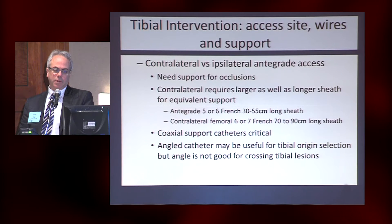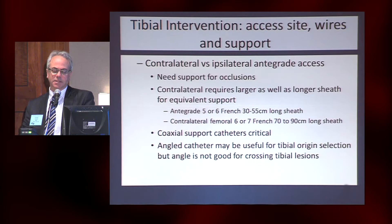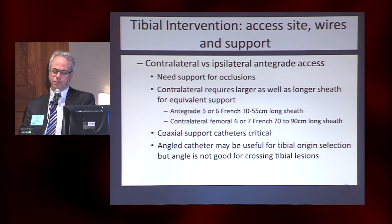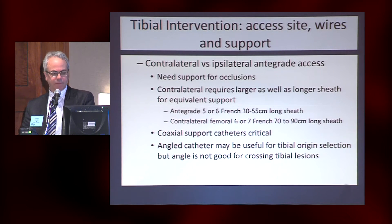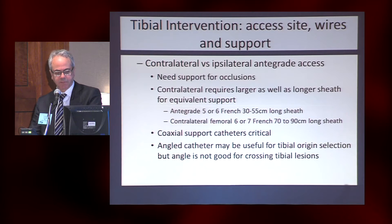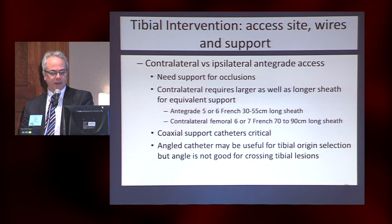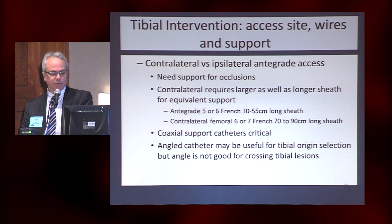Technically, what's important? Tibial access and intervention at the access site is important. I still go up and over for most cases, but with a good sheath — you need good support, particularly when treating occlusions. The farther you are from it, the larger the access needs to be. Contralateral, I'm generally using six or seven French 70-centimeter long sheaths, and antegrade would be a five or six. I like having coaxial catheters inside so I can push harder and get through things.